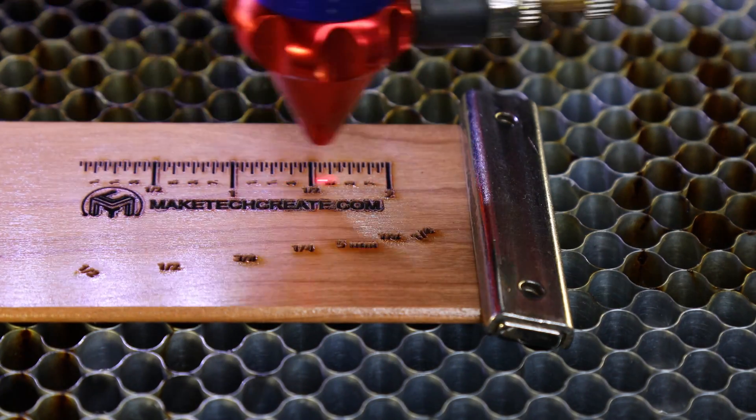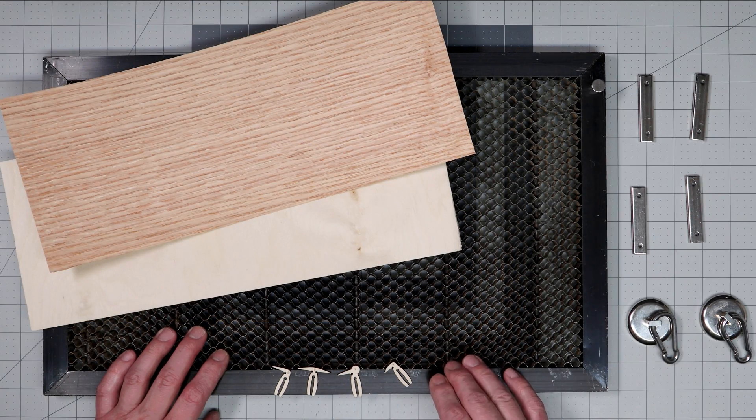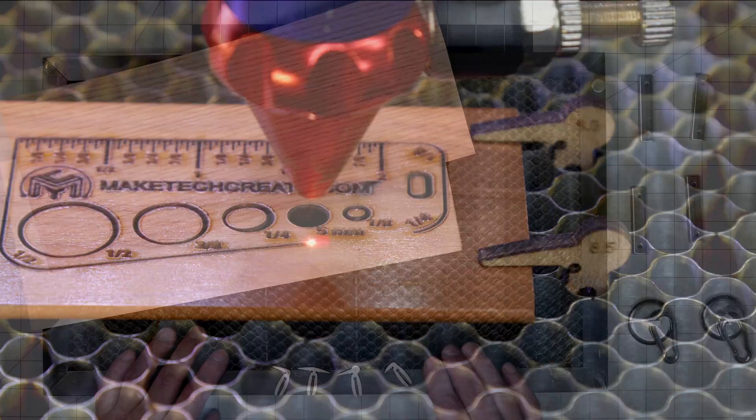We're going to start by looking at some different types of magnets you can use, then we're going to move on to looking at these mini hold down pegs.